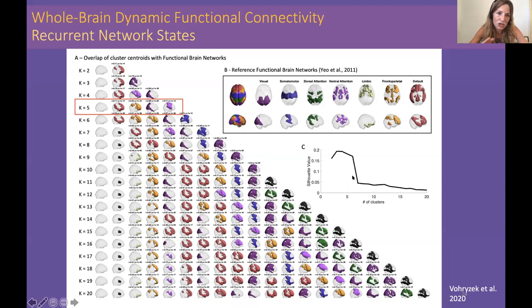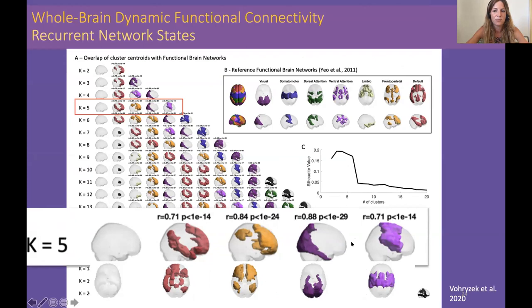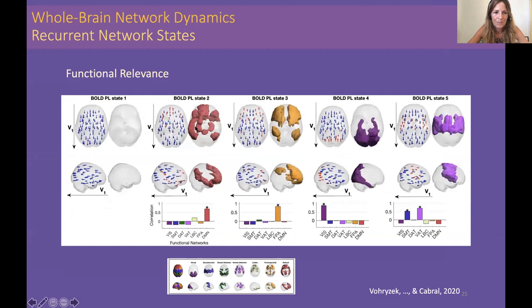We use the solution with k equals five, giving five states with really meaningful systems known to characterize brain function: the frontoparietal network, the default mode network, the visual, and the somatomotor. We computed the silhouette value to determine the best number of clusters representing this system, choosing k equals five. The overlap with reference systems is really significant, with very high significance.